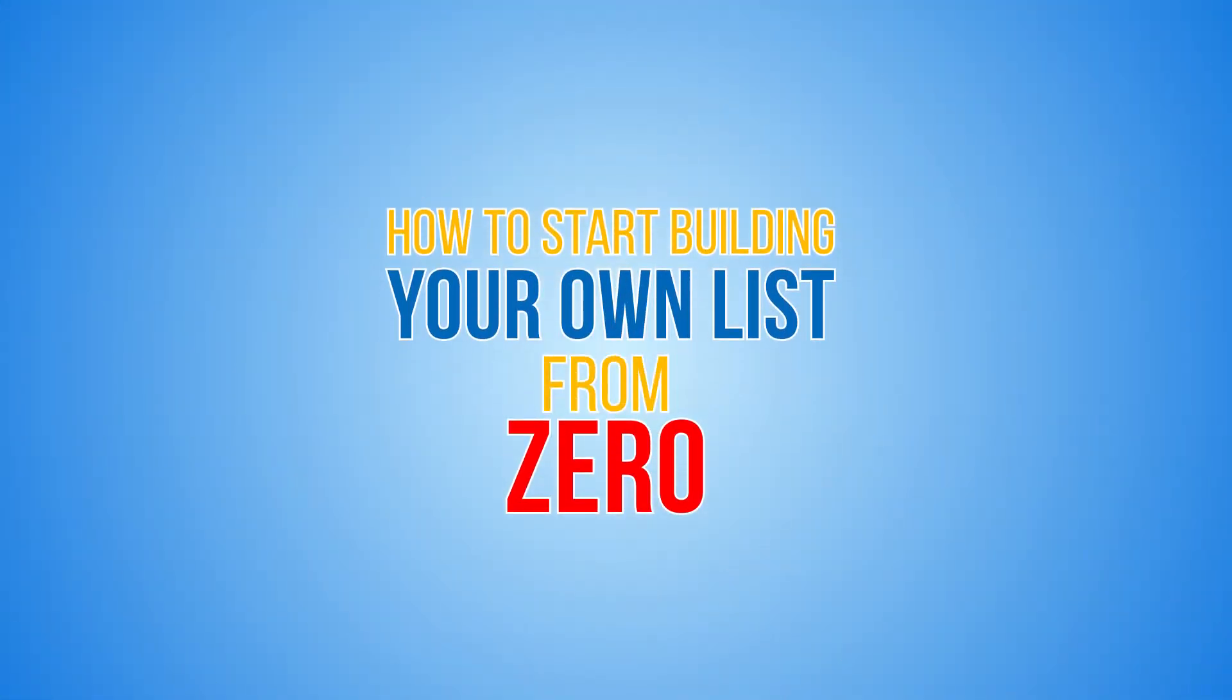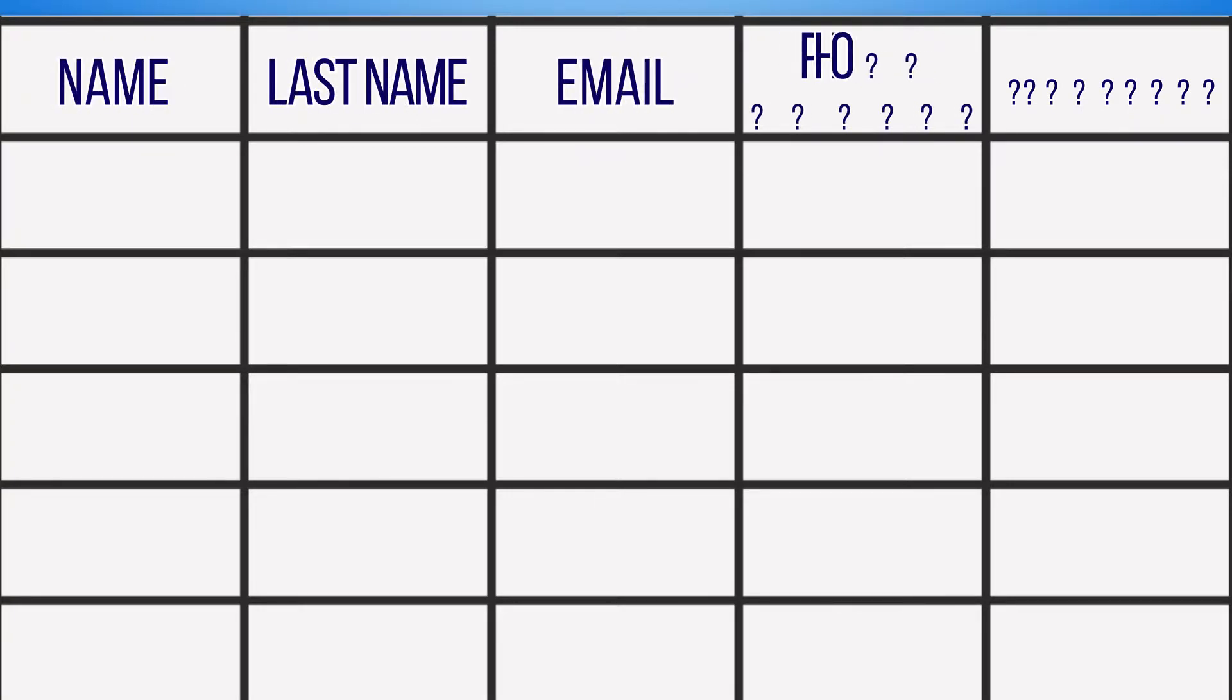How to start building your own list from zero and at no cost. One, take a piece of paper and divide it in five columns and give a name to each column: name, last name, email, phone number, signature.